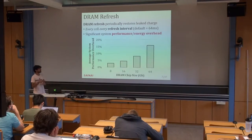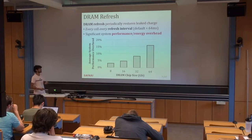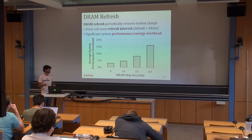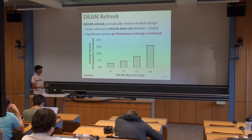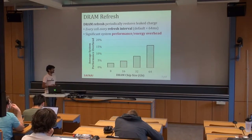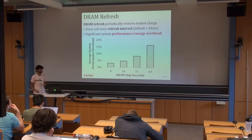Here's some data from our evaluations demonstrating how costly this process is. On the y-axis we show average system performance overhead, and on the x-axis we show various DRAM chip sizes ranging from 8, 16, 32, and 64 gigabits. We see that this performance overhead is very significant, especially for larger chip sizes such as 64 gigabits that we might see going forward into the future. This is a big problem for us.